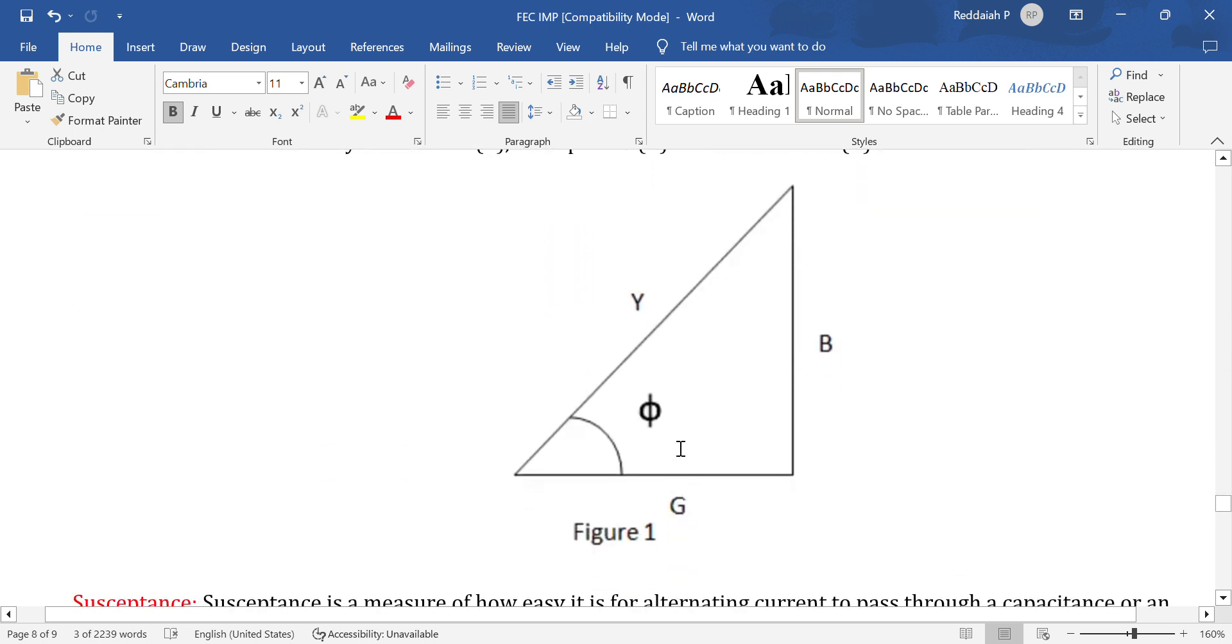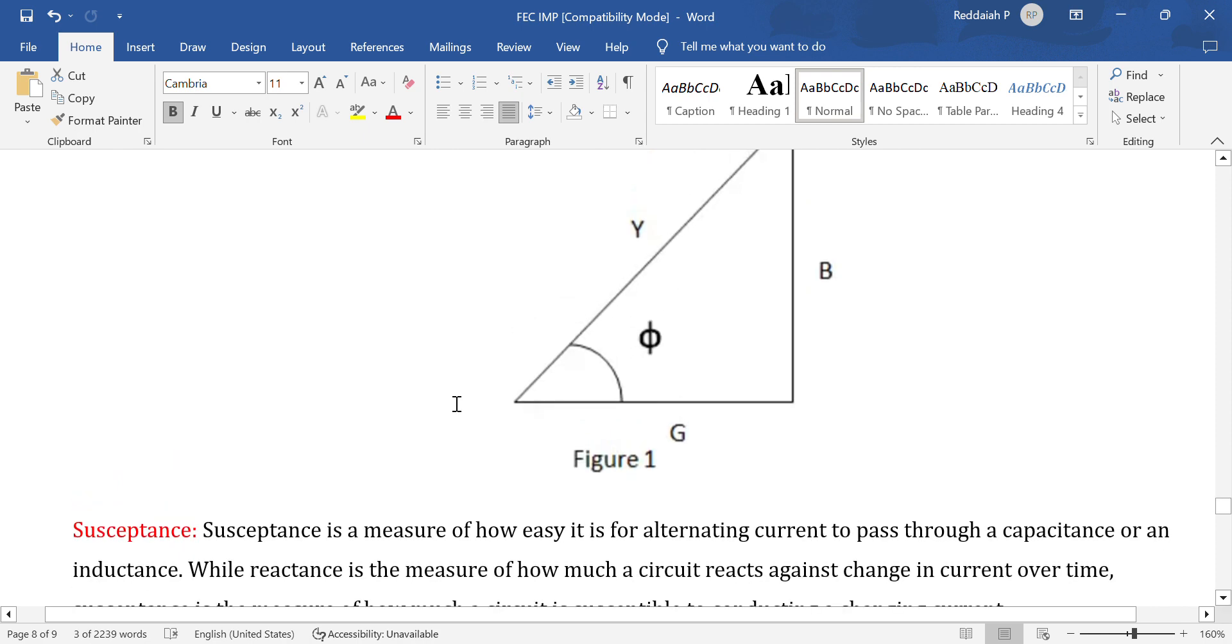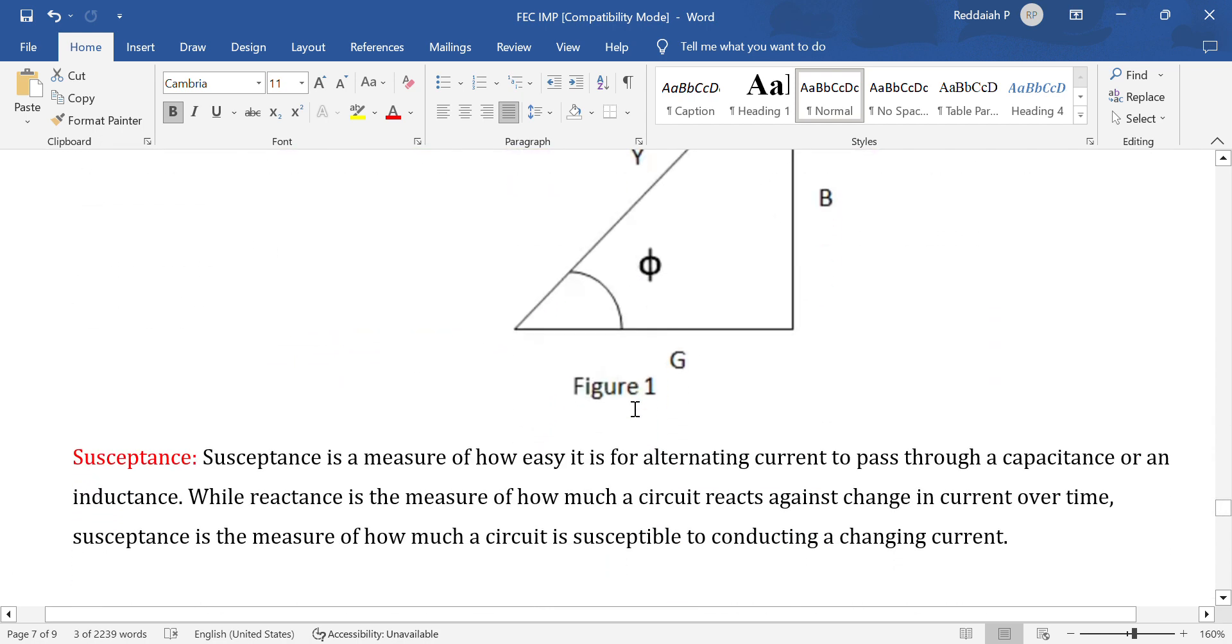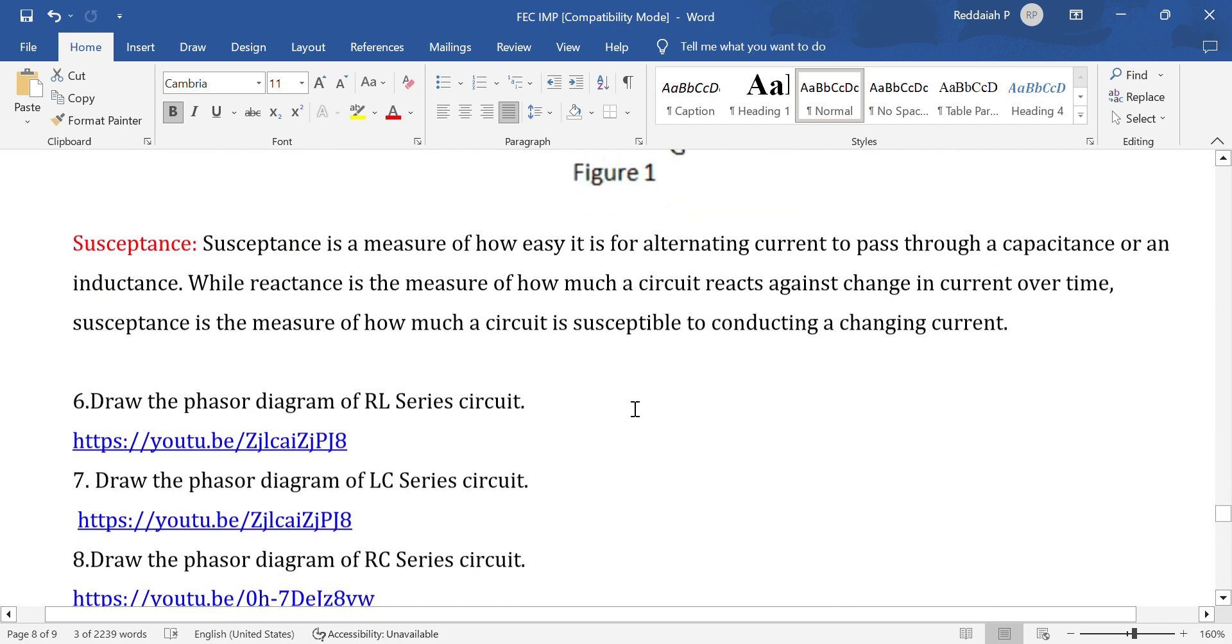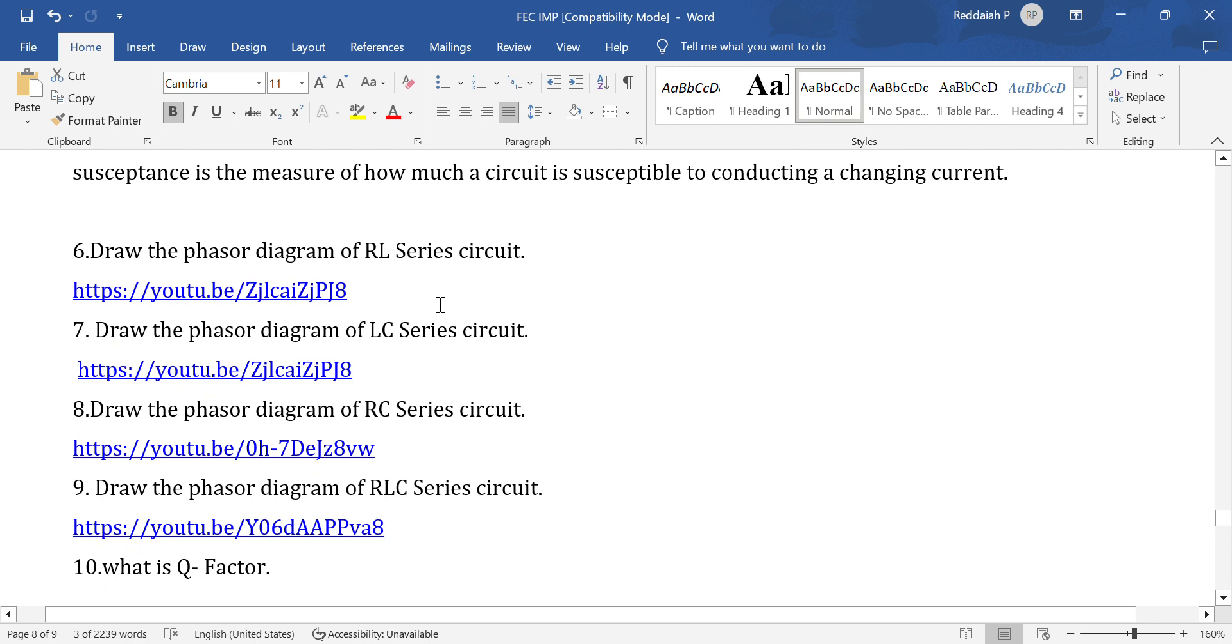Admittance triangle: Y is the admittance, G is the conductance, B is the susceptance. Draw the phasor diagram for RL circuit, RC circuit. In RC circuit, current leads the voltage. For RLC series circuit problems, two marks and ten marks, very important.